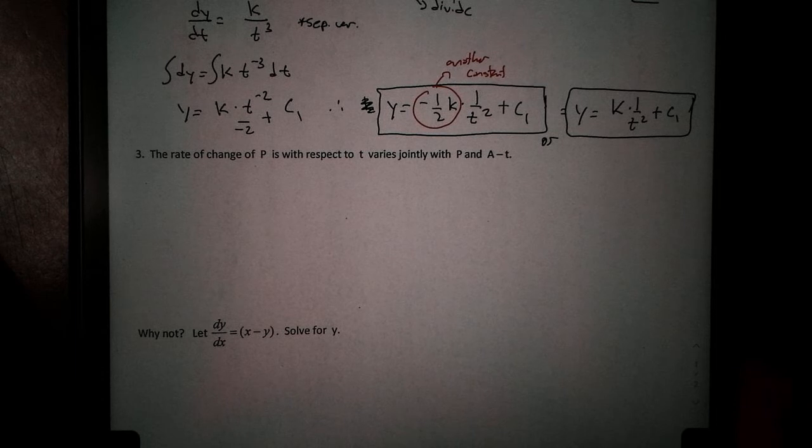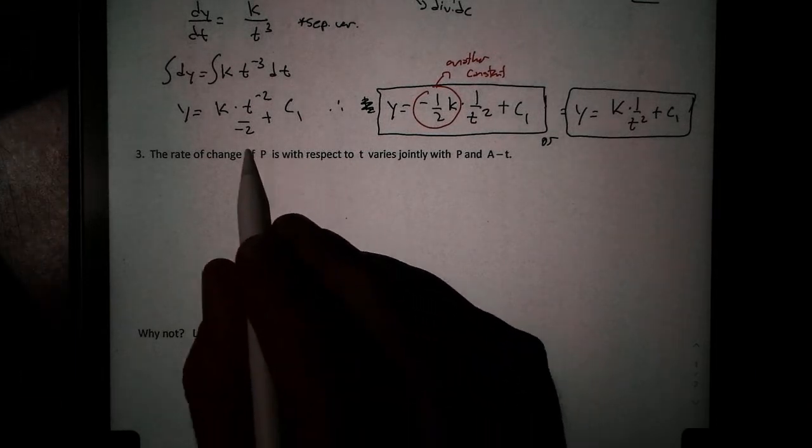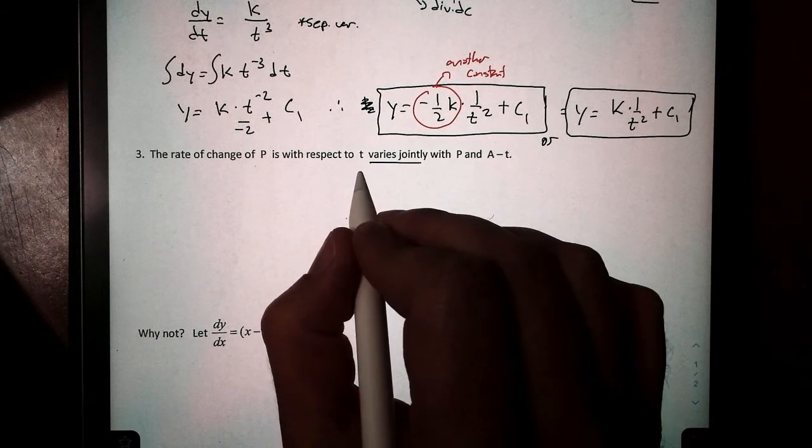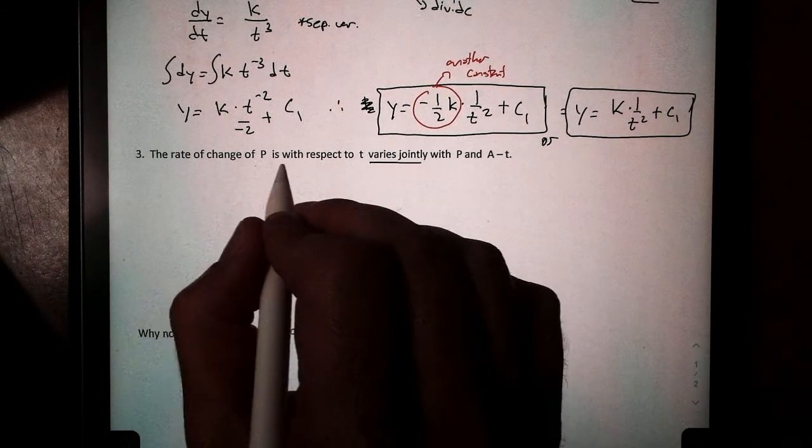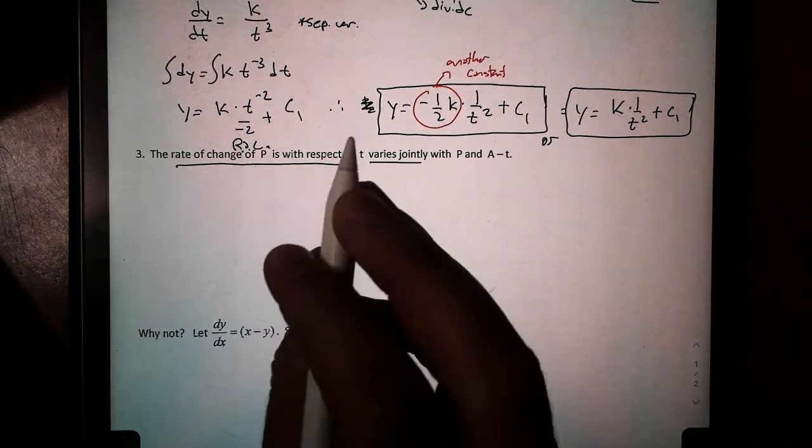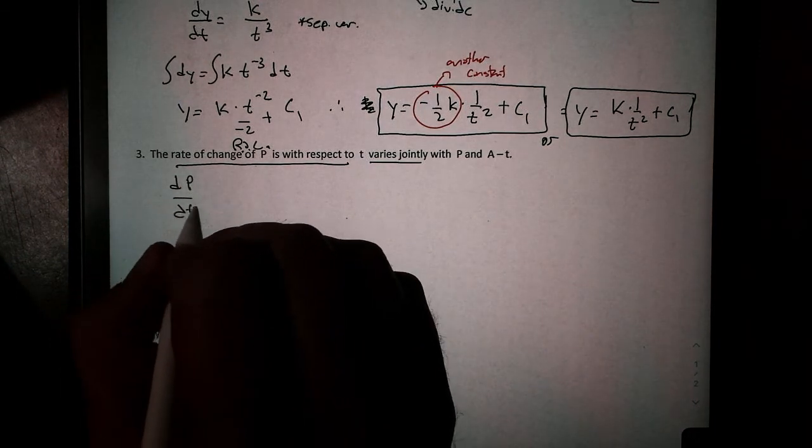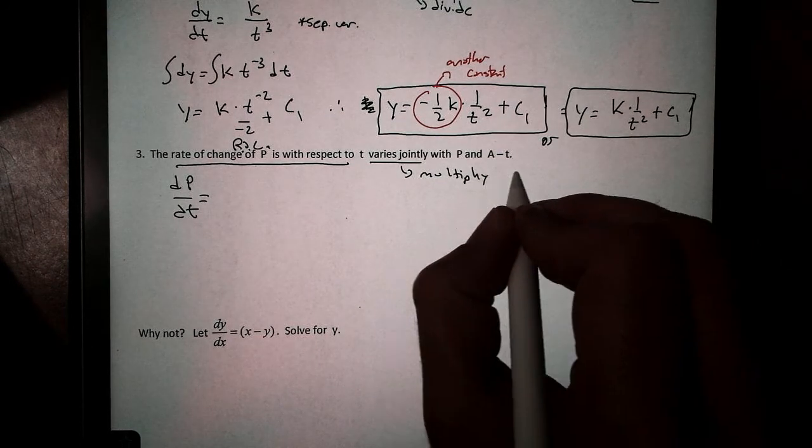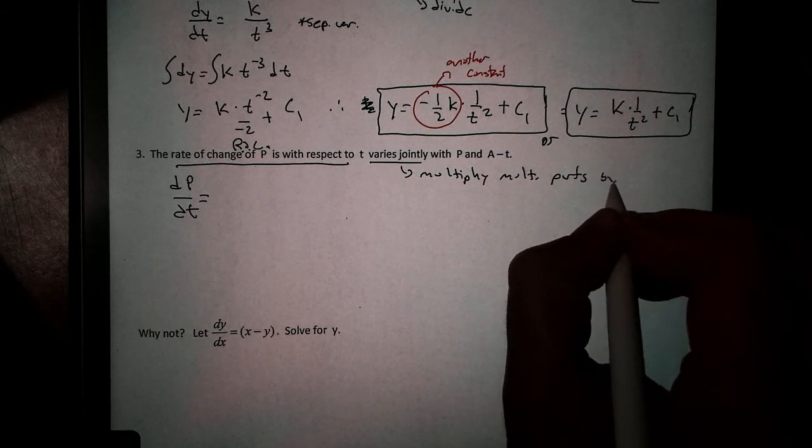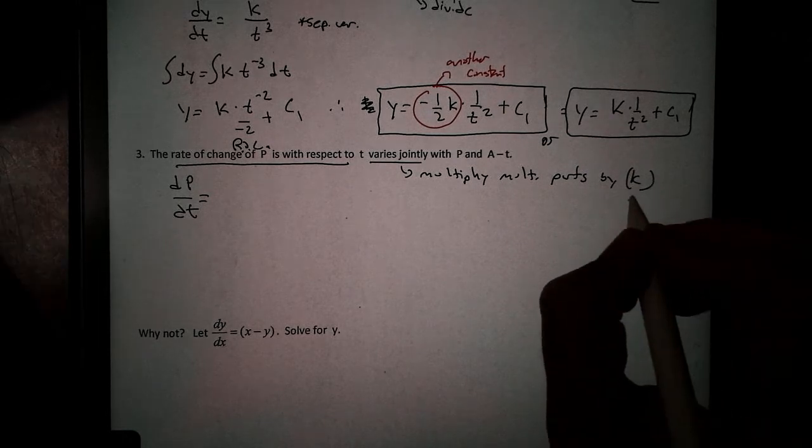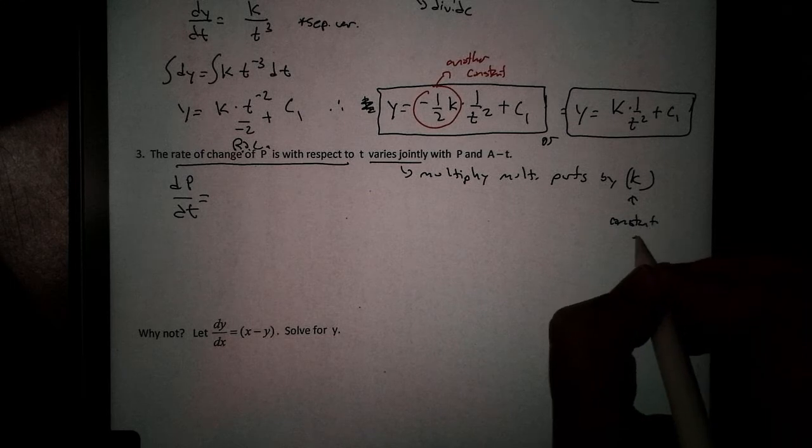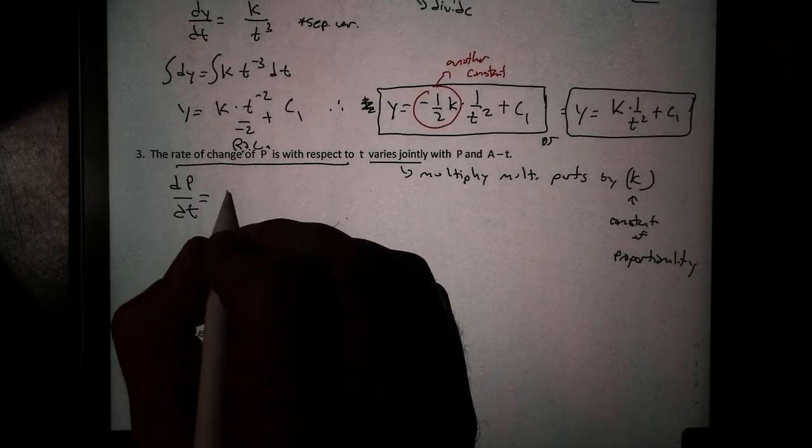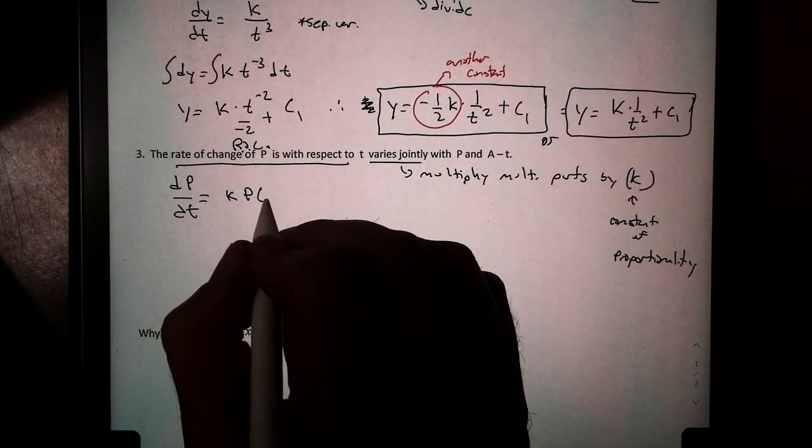All right, number three. It says the rate of change of P is with respect to T varies jointly. Now we see this phrase varies jointly. So the rate of change of P with respect to T—there's our derivative part, R-O-C, you know me, I'm the R-O-C. So I would write this as the change in P with respect to T is. Now varies jointly—we're going to multiply multiple parts together, multiple parts by K, by our constant. And by the way, this K, it actually has a name to it. It is called the constant of proportionality. So what that means is I'm going to take K and multiply it by P, and multiply that by A minus T.